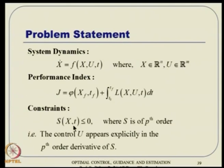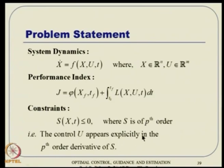The constraint function S is said to be of p-th order if taking p time derivatives causes the control u to appear explicitly — analogous to relative degree in dynamic inversion. For example, with a height constraint h, h-dot = v sin(gamma) and h-double-dot involves gamma-dot which involves control. We differentiate the equality S - alpha-squared = 0 successively: s-dot + alpha times alpha-dot = 0 for the first derivative, s-double-dot involves alpha, alpha-dot — continuing up to the p-th derivative.